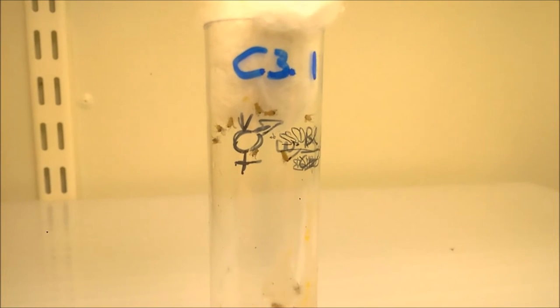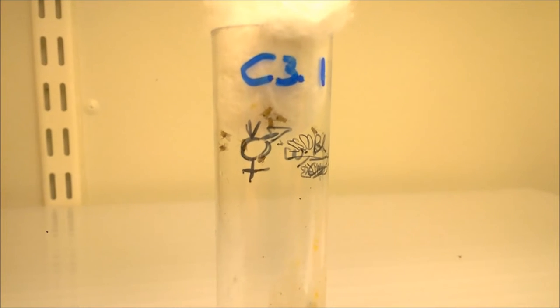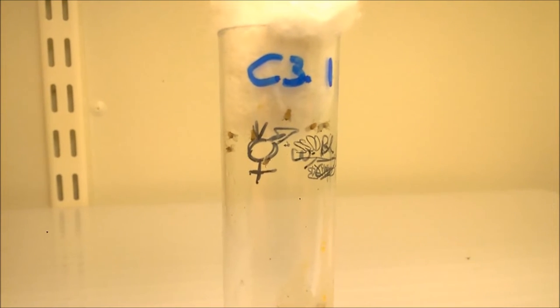After selection, insects are crossed by simply combining males and virgin females into the same vial for a couple of days.